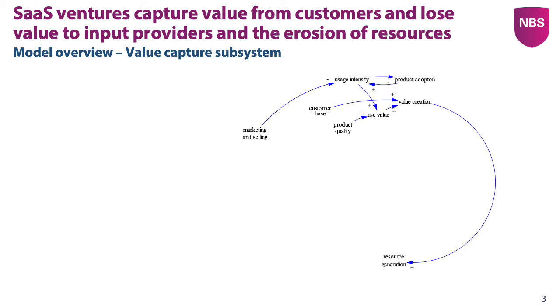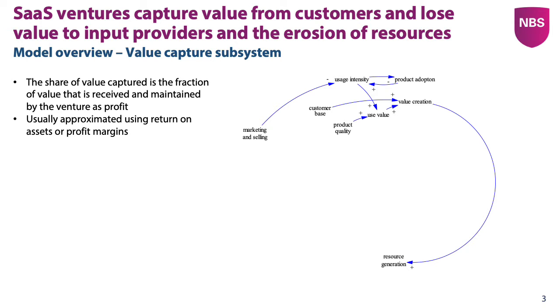Our second performance outcome is the share of value captured, which is the fraction of value that is received and maintained by the vendor's profit, and usually empirical studies would use profit margins or return on asset to approximate it.